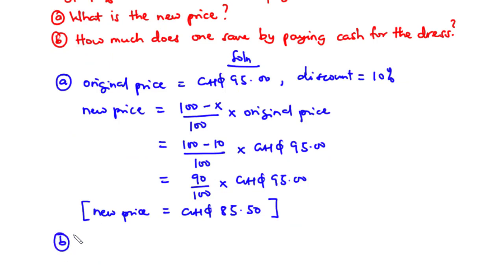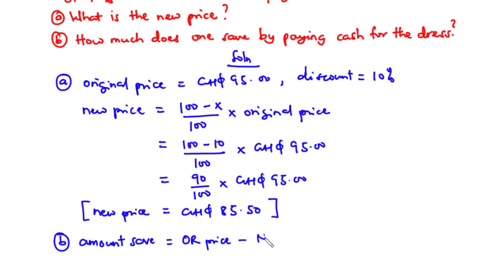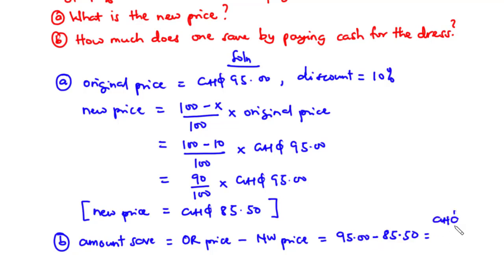For part b, we find how much one saves by paying cash. The first approach: the amount saved equals the original price minus the new price, which is 95 Ghana cedis minus 85 Ghana cedis 50 pesewas. Subtracting gives the amount saved as 9 Ghana cedis 50 pesewas.